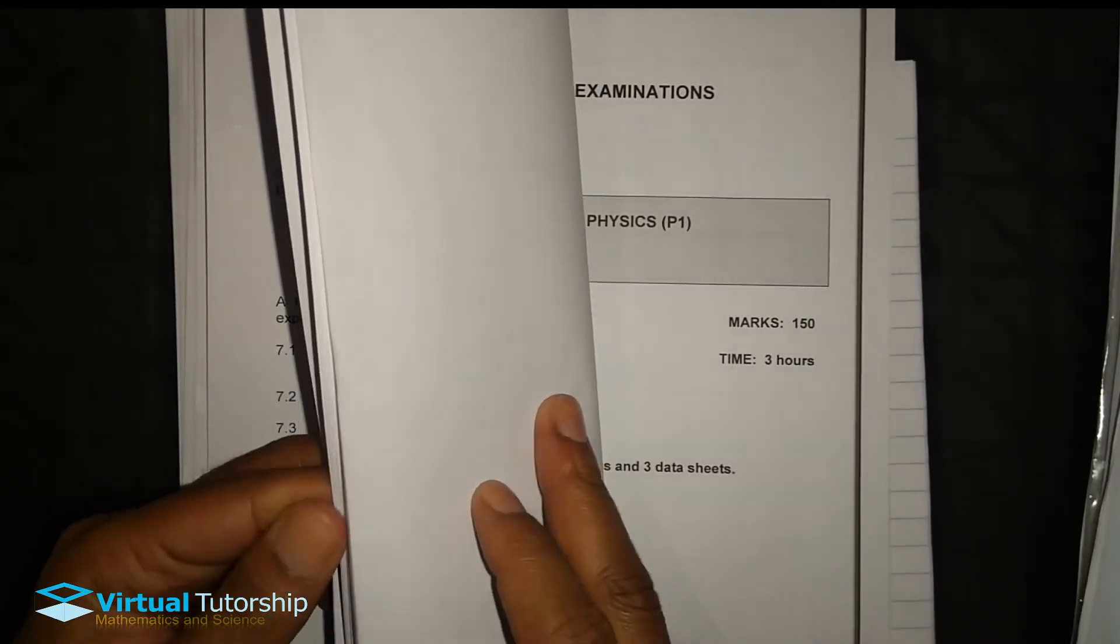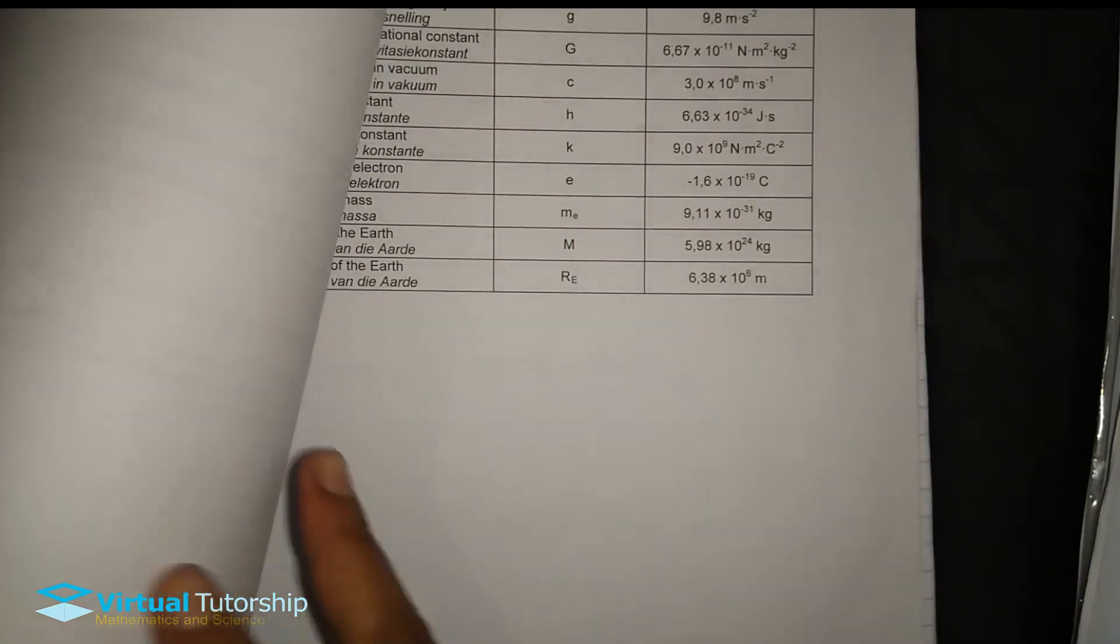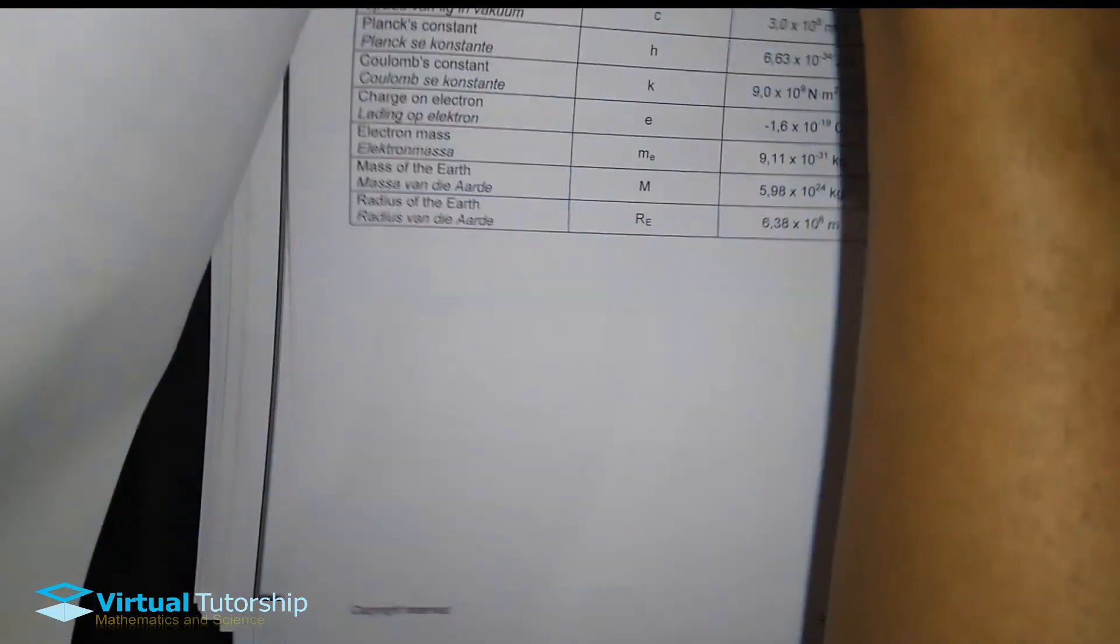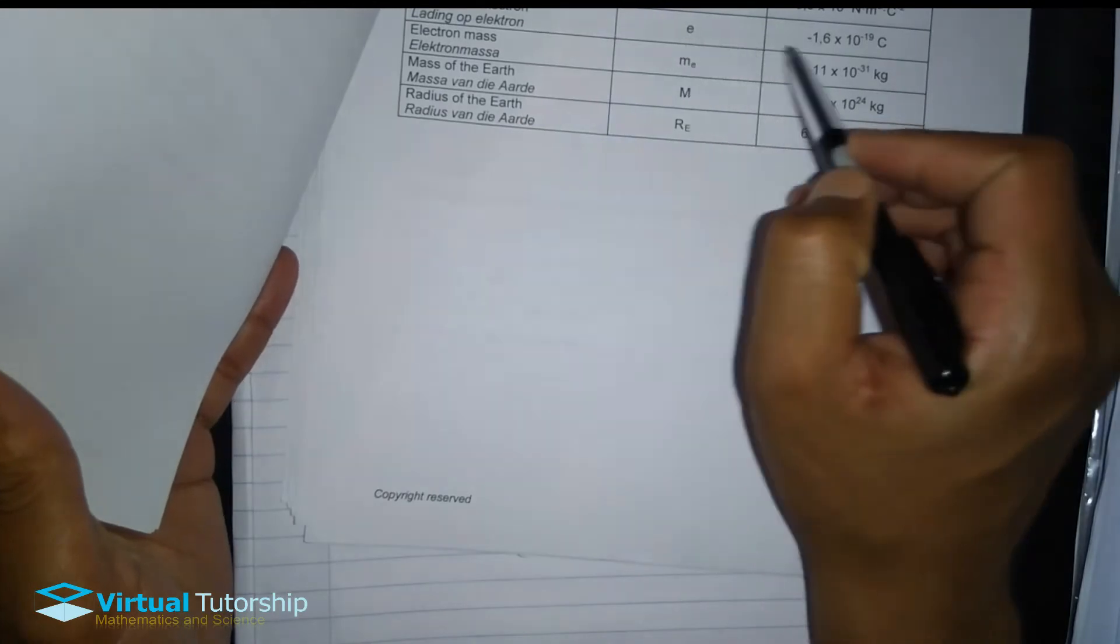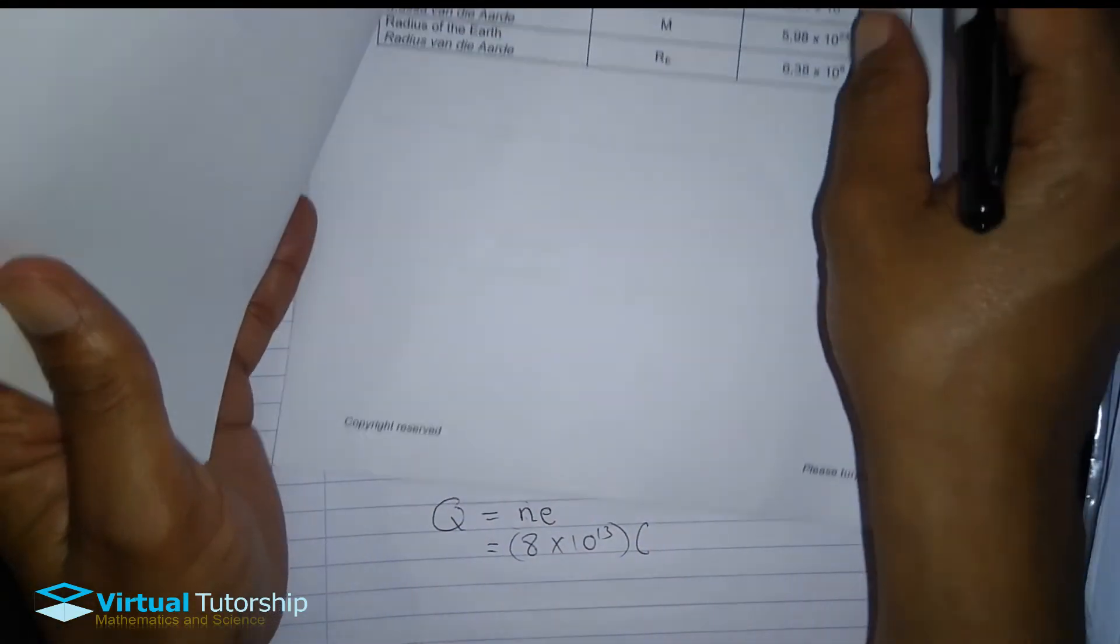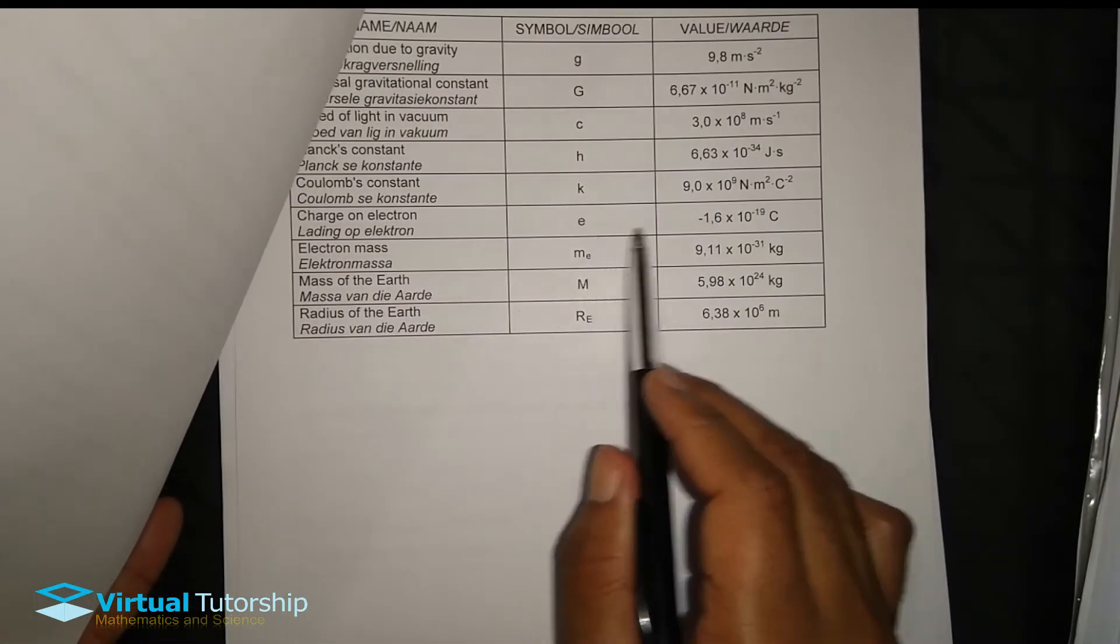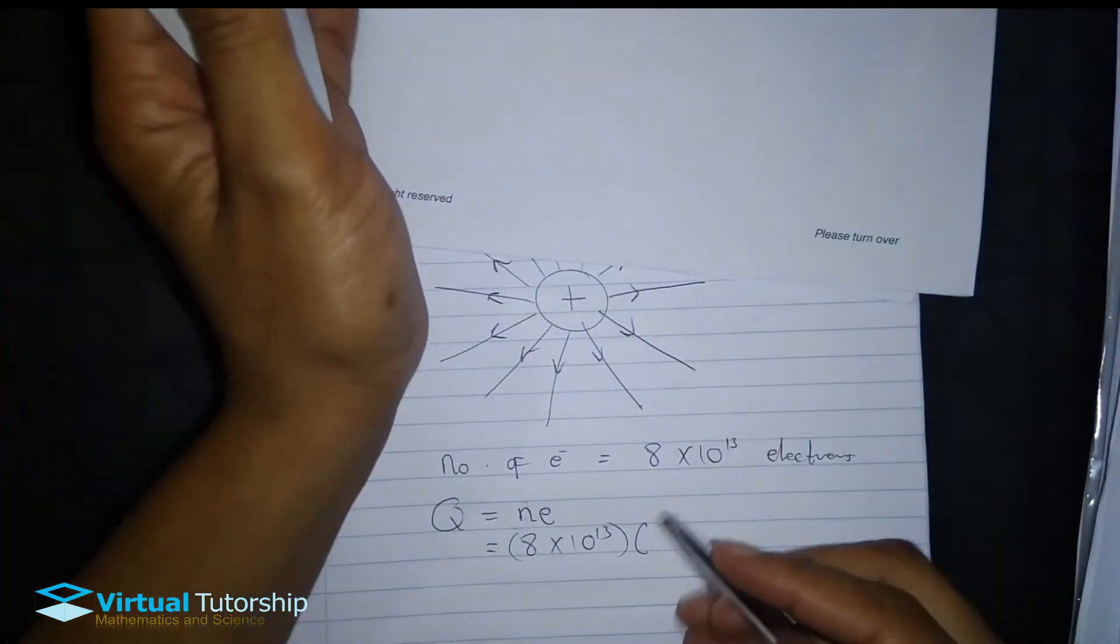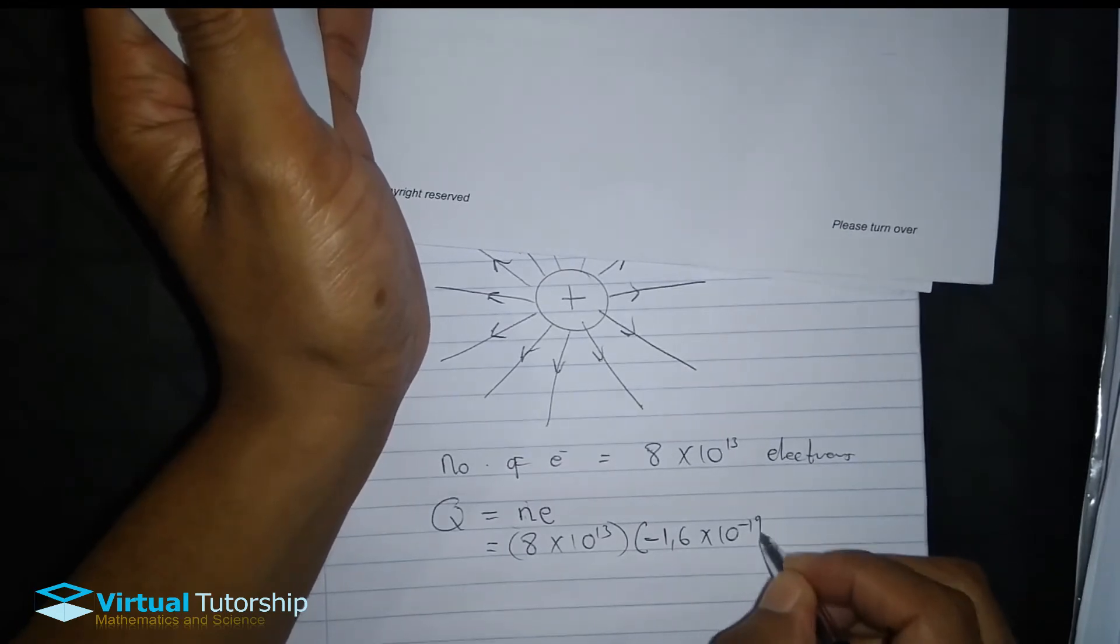So, for the actual charge, the number of electrons transferred, the charge on an electron. On the formula sheet, the physical constants, the charge on an electron is given as, is equal to, the charge on electron is what? It's minus 1.6 times 10 to exponent minus 19.